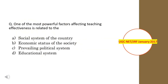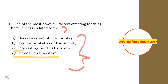One of the most powerful factors affecting teaching effectiveness is related to — options given are: the social system of the country, economic status of the society, prevailing political system, and educational system. There are a variety of factors that influence classroom teaching, but the most important one is always the educational system. So the correct option is option D.